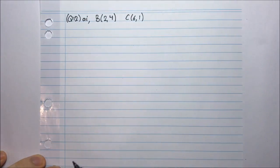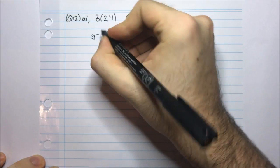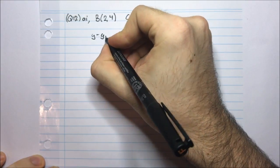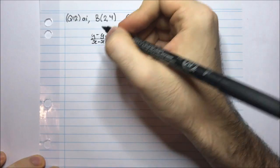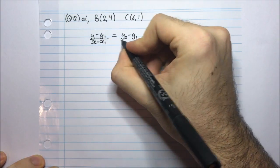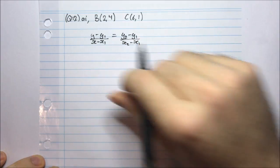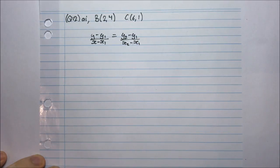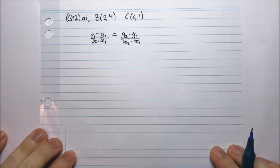If I have two points I'm going to use the two-point formula, which is: y minus y1 over x minus x1 equals y2 minus y1 over x2 minus x1. It doesn't matter what we choose to be x1, y1 and x2, y2 as long as we're consistent throughout the use of the formula.